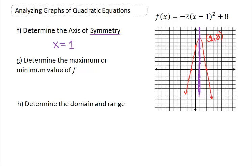In part G, we want to figure out if our graph has a maximum or a minimum. If our U opens down, such as in this example, that means we have a high point on our graph, which means we're going to have a maximum. If our graph opens up, that means we have a low point on our graph, which means we have a minimum.